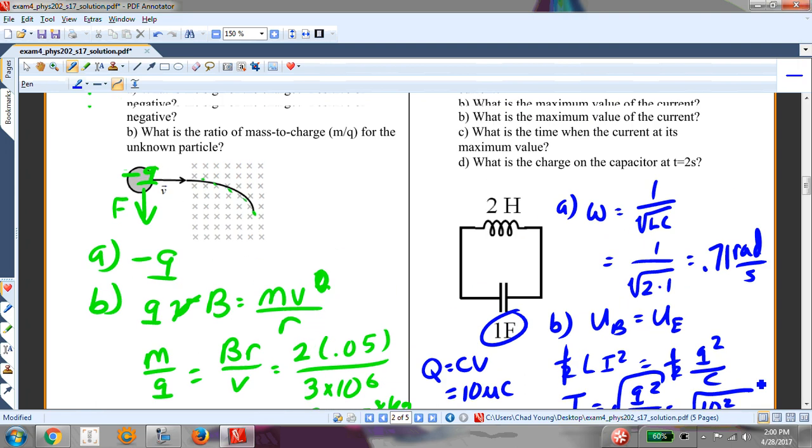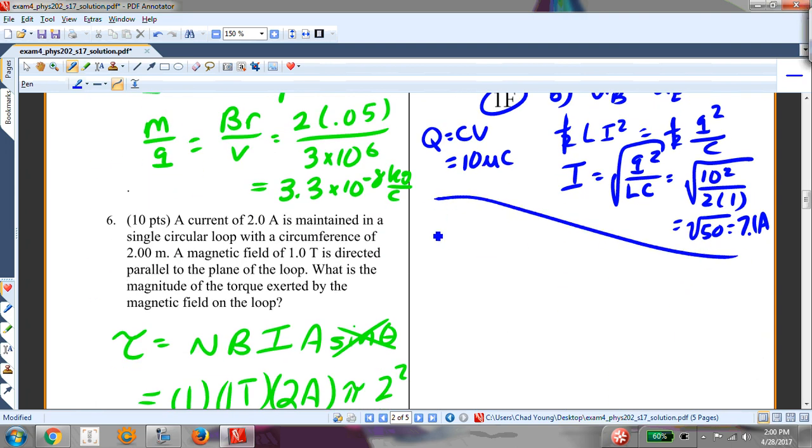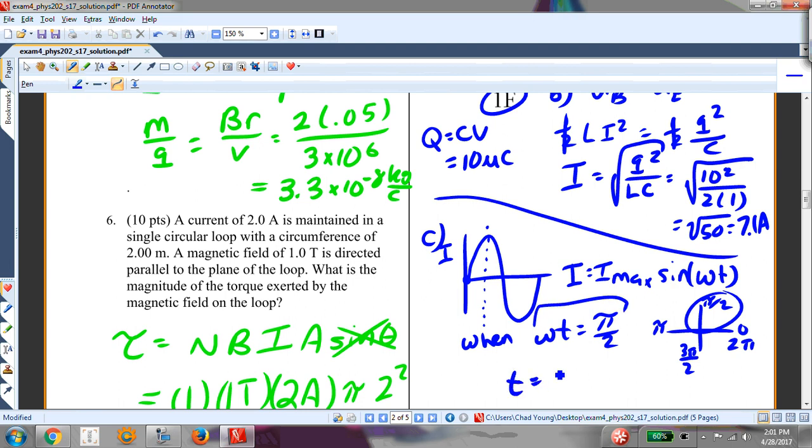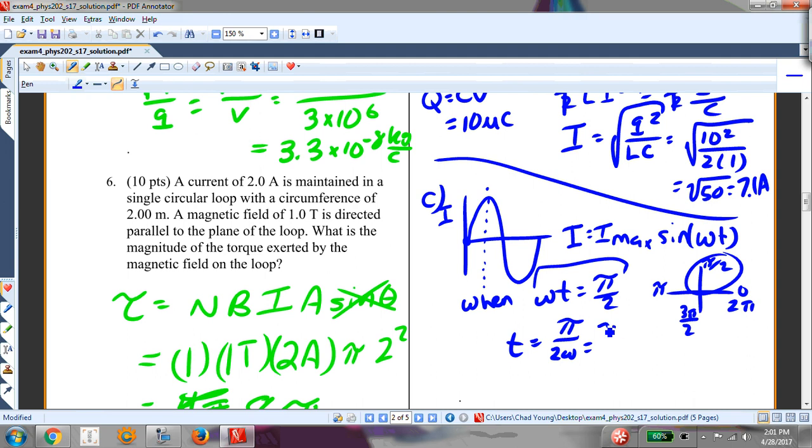Part C, what is the time when the current is at its maximum value? So remember that in this, my current is starting at 0, and it follows this sine function. I is equal to I max sine of omega t. And so my current maximum is at this point, and this occurs when omega t is equal to pi over 2. Don't forget your unit circle here. The sine function is equal to 1 when that value for omega t is equal to pi over 2. So all I have to do is just say omega t is equal to pi over 2, and then I solve that for t. So that's going to be pi over 2 omega. I've already found the angular frequency, that's omega, 0.71. So it's pi over 2 times 0.71. And that is equal to 2.2 seconds.